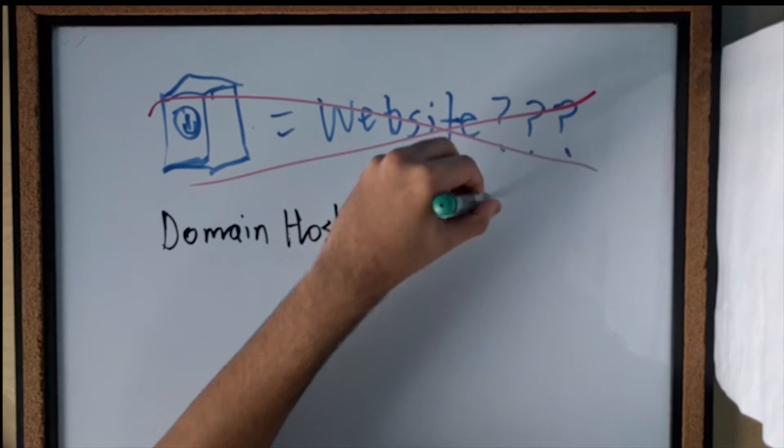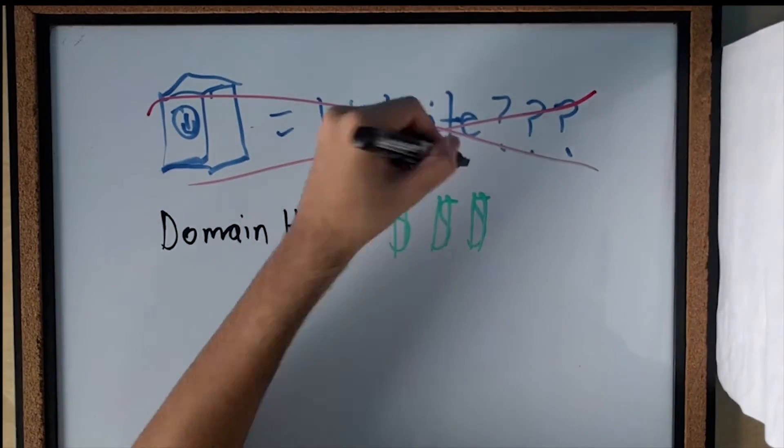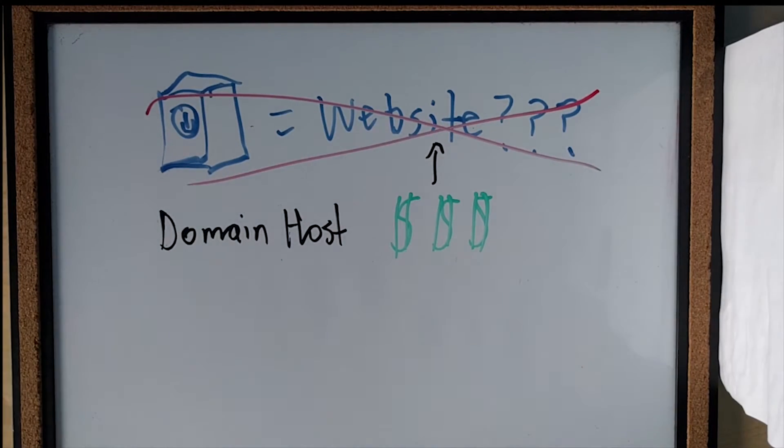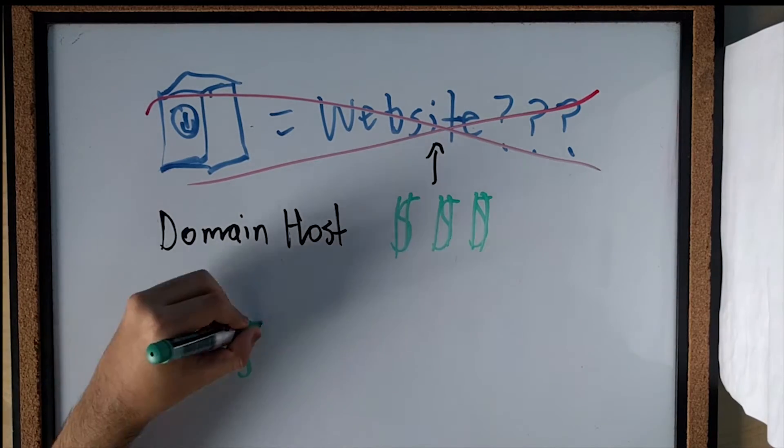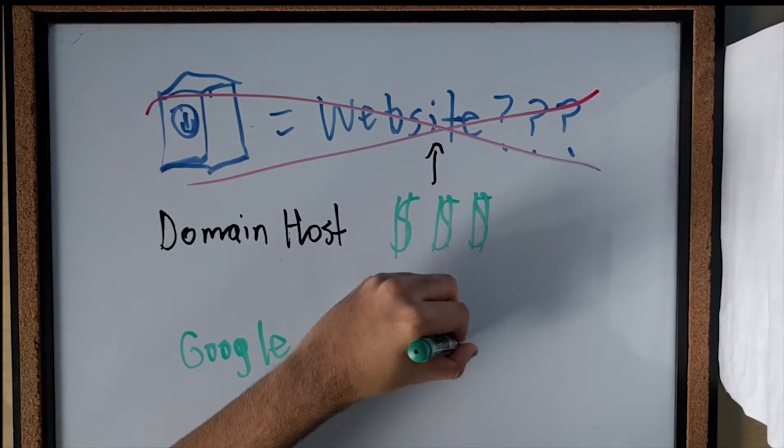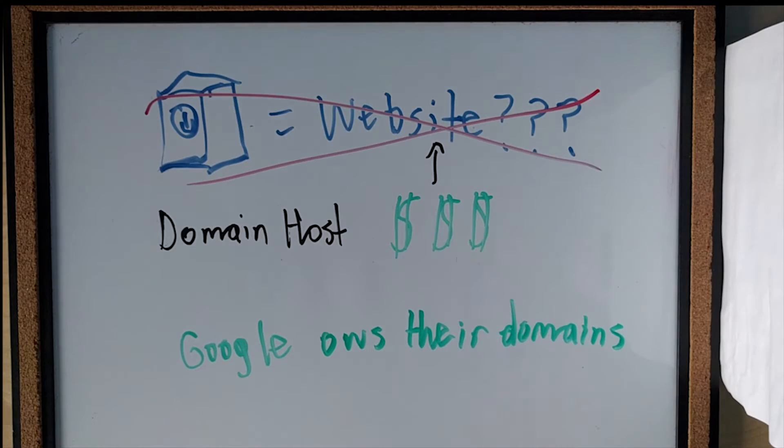When you access a webpage, it has all its information stored on the server which is played back to you as a website. Large corporations like Google have their own server and affiliate companies can use the Google server to host their information.